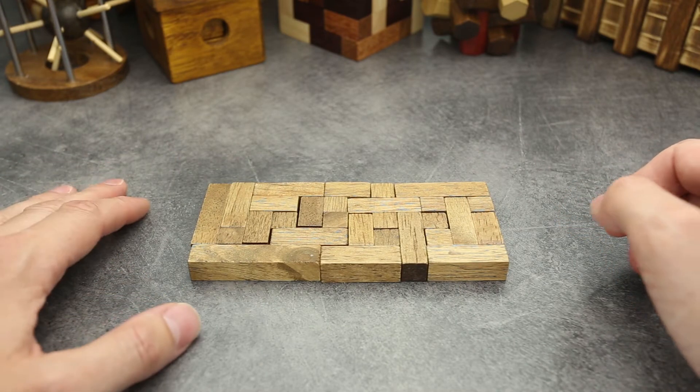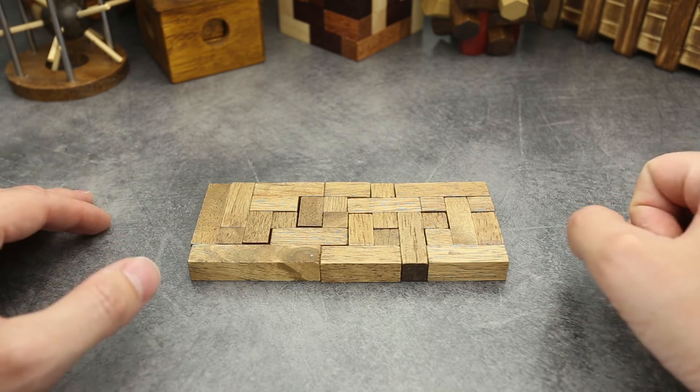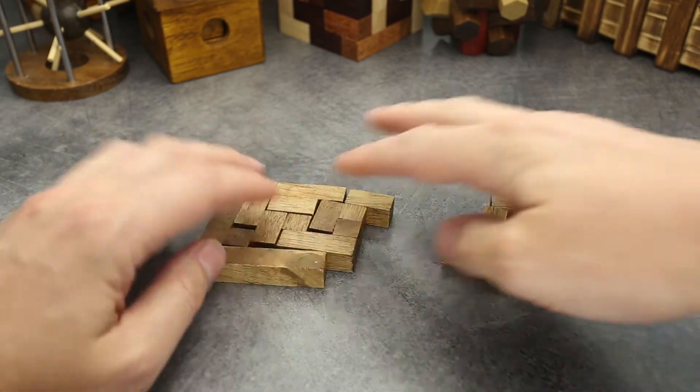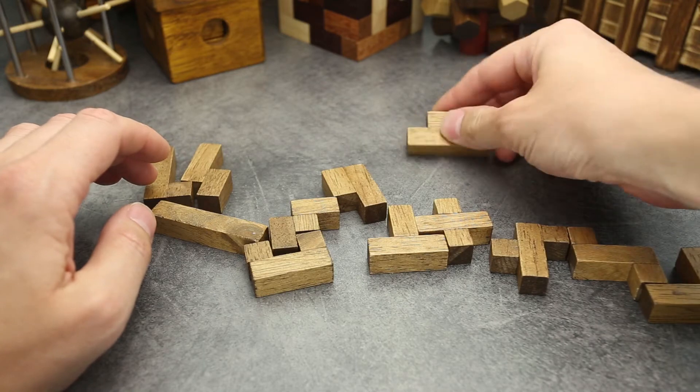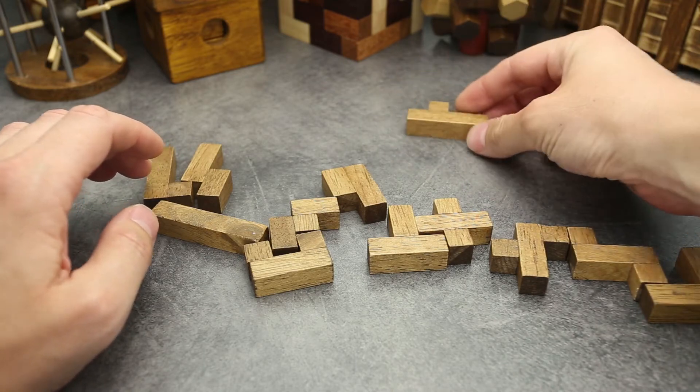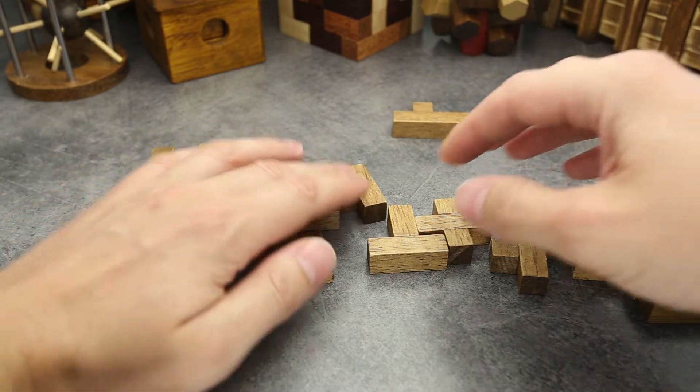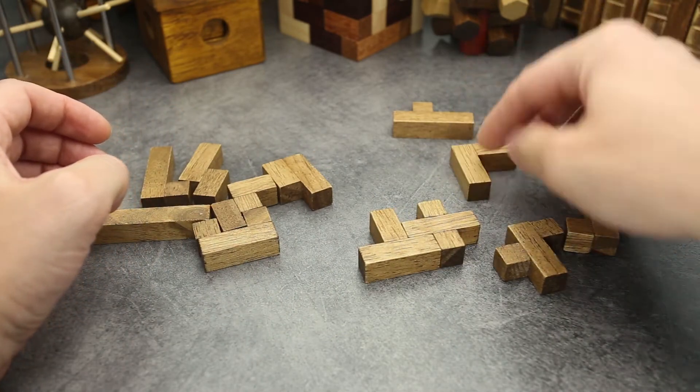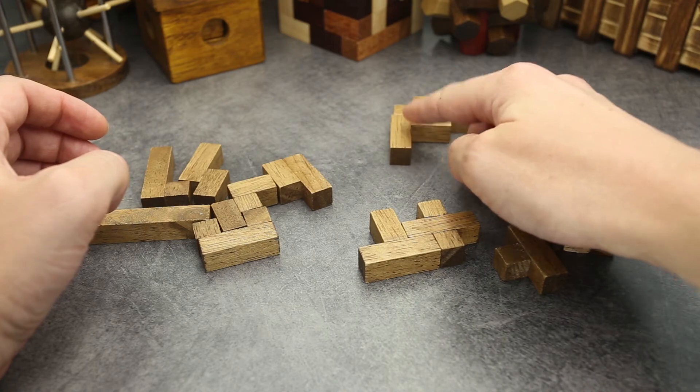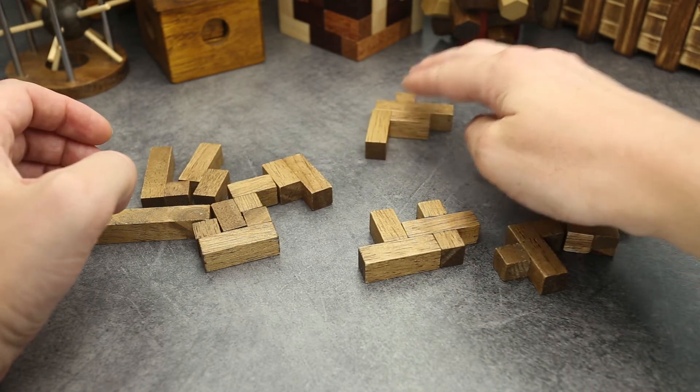So the next one, I'm going to show you a giraffe. So I will start with this piece. It's going to be ears and the head of our giraffe. The next one is going to be this piece. It's going to make a long neck of the giraffe.